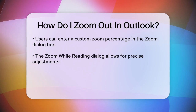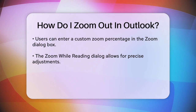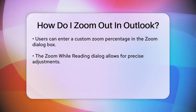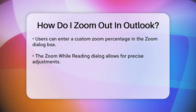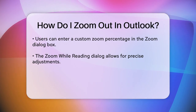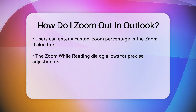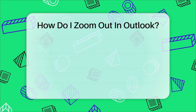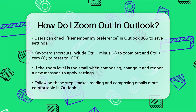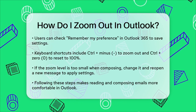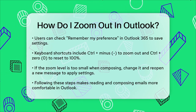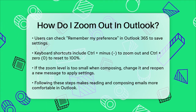This way, your zoom settings will be saved for future sessions. If you're using keyboard shortcuts, you can press Ctrl and the minus key to zoom out. To reset the zoom to 100%, press Ctrl and the 0 key.